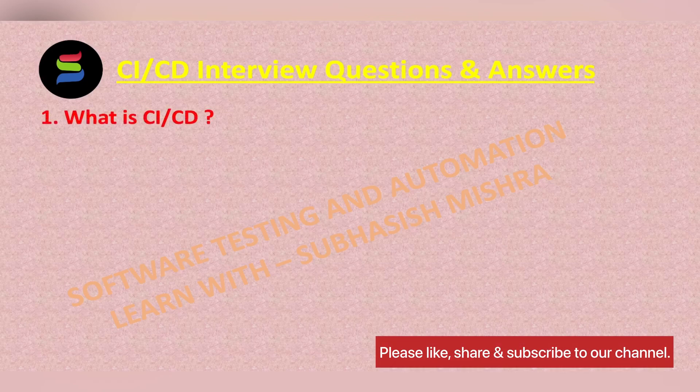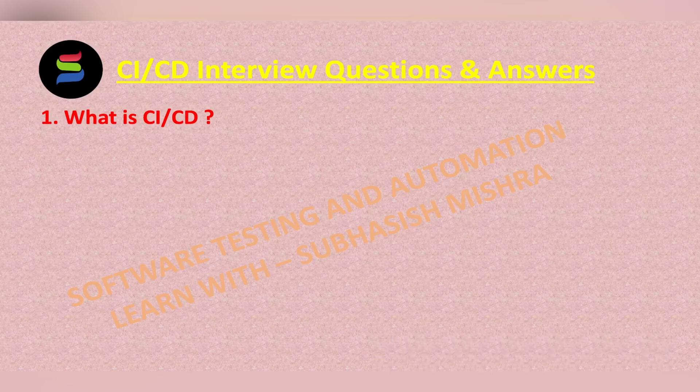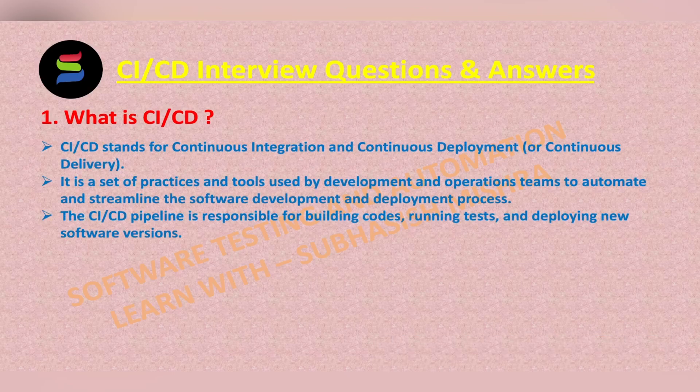The very first question is: what is CI/CD? CI/CD stands for continuous integration and continuous deployment or continuous delivery. It is a set of practices and tools used by development and operations teams to automate and streamline the software development and deployment process. The CI/CD pipeline is responsible for building code, running tests, and deploying new software versions.